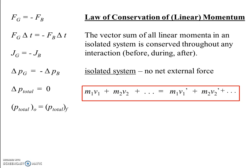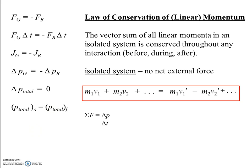When doing conservation of momentum problems, start by writing out the law in equation form in full, then tailor it to the situation. Connecting back to sigma F equals delta p over delta t: if there's no net external force, sigma F is zero, which means delta p is zero — no net change in momentum. Now let's finally go back to problem 5 and solve it.